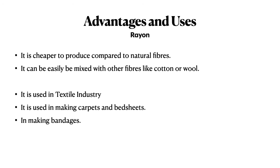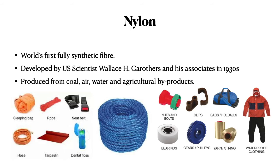Rayon is cheaper to produce compared to other natural fibers like cotton and wool, making it a cheap alternative. It can be mixed with other fibers like cotton or wool to produce blended fabrics. Rayon is used in the textile industry for making clothes, carpets, bedsheets, and bandages.